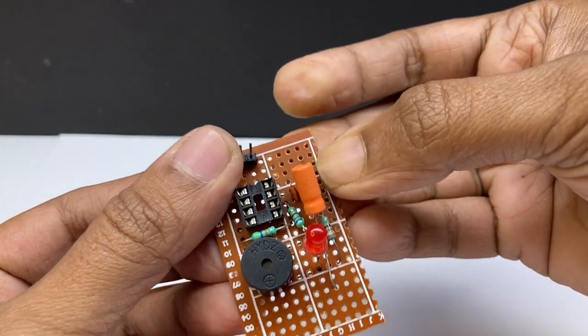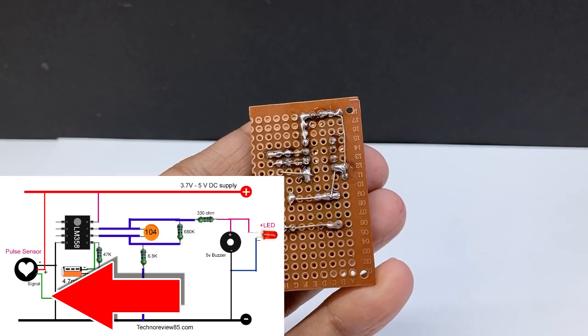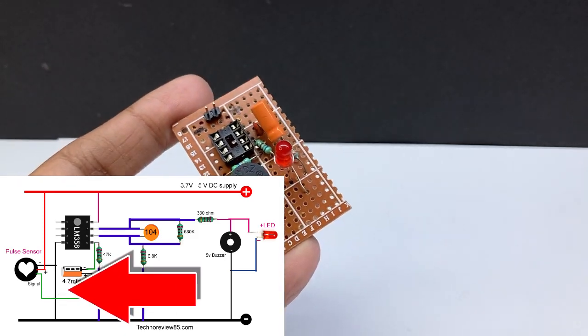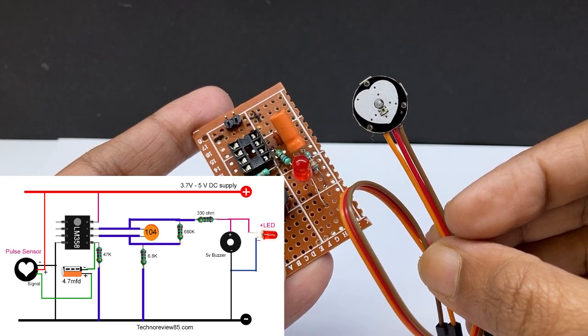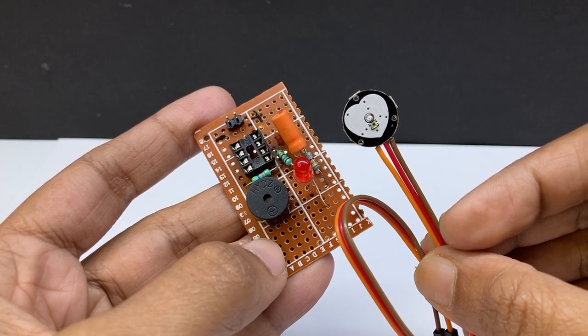Now connect sensor signal pin to 4.7mF capacitor positive pin. Connect sensor positive and negative to positive and negative supply line.